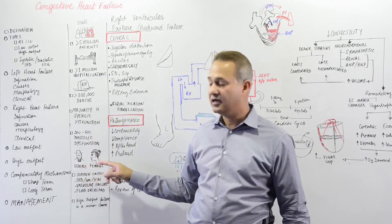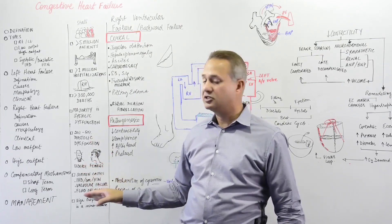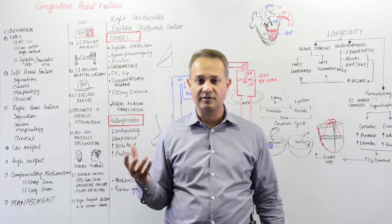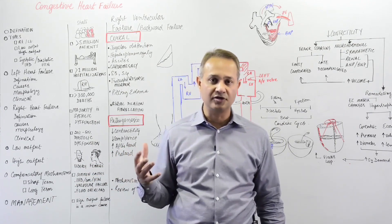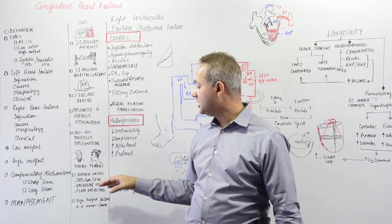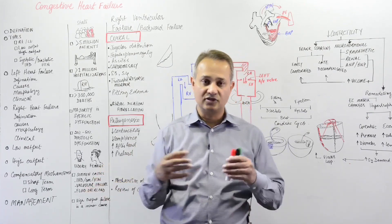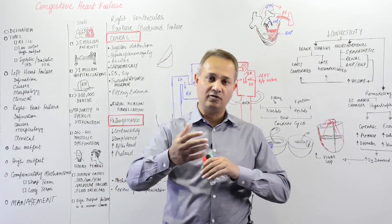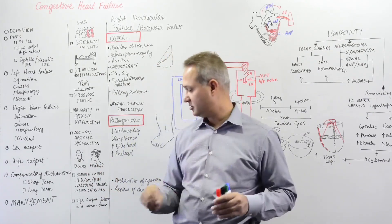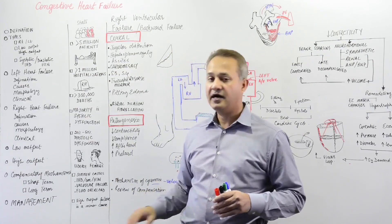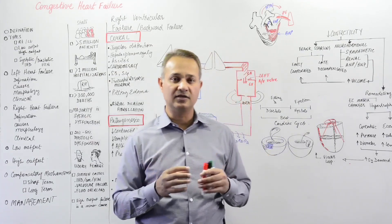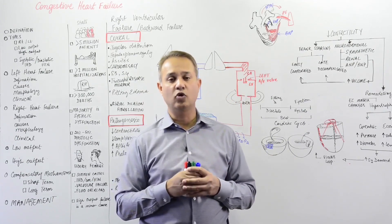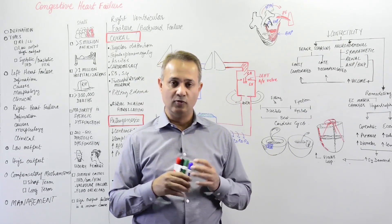Diastolic dysfunction is more common in elderly patients and in women. Common causes for systolic failure are damage to heart tissue — ischemic heart disease, infarction, and coronary artery disease. On the diastolic side, dysfunctions are usually related to valvular problems or afterload and preload issues.